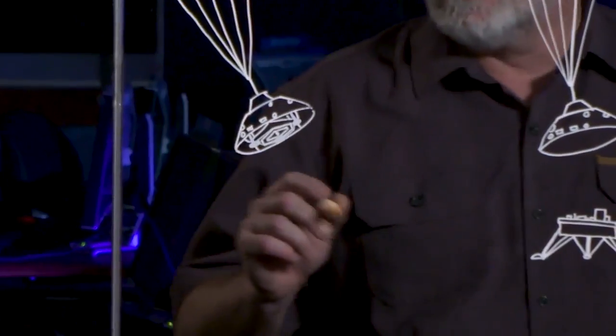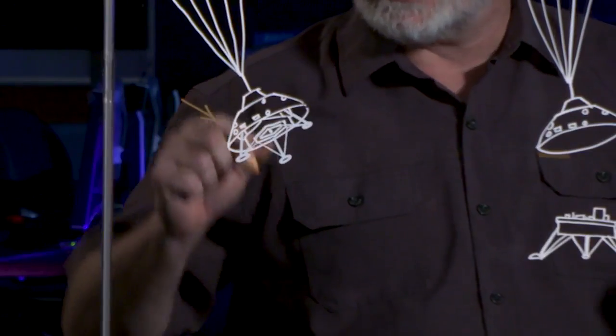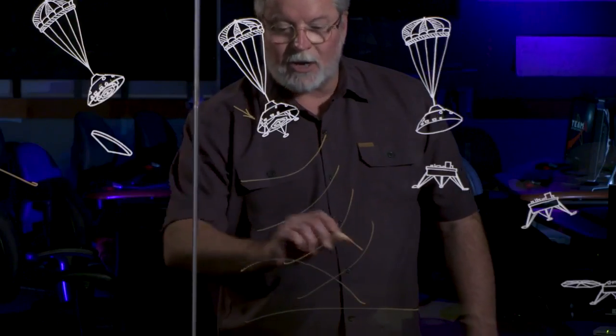10 seconds after the heat shield is dropped, three pyrotechnically deployed legs are released and locked for landing. About a minute later, the landing radar is turned on, sending pulses toward the surface of Mars, as the vehicle starts to try to measure how high it is above the surface and how fast it's going.